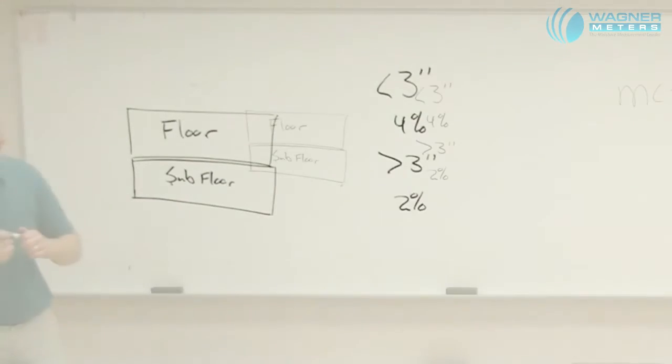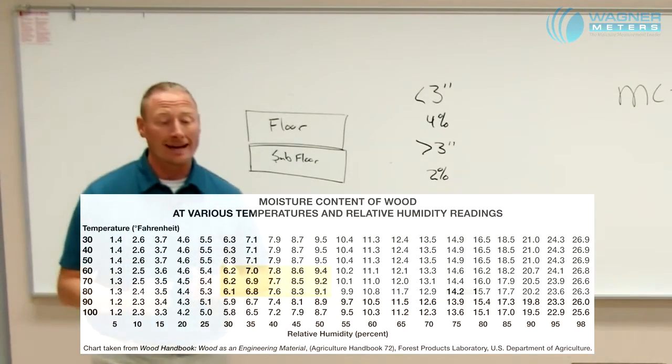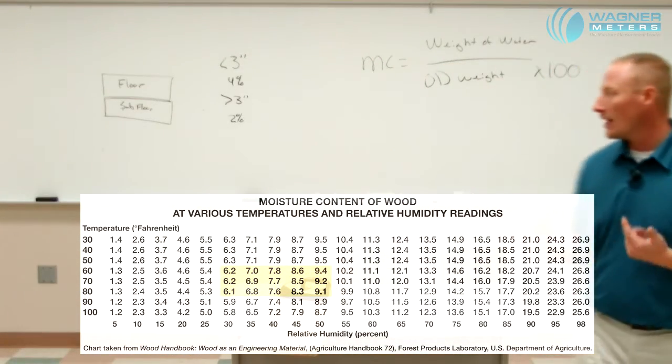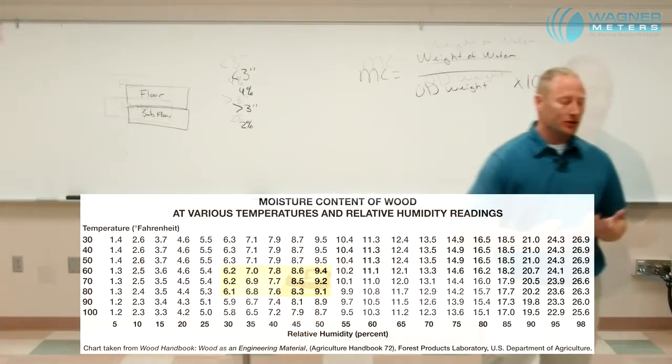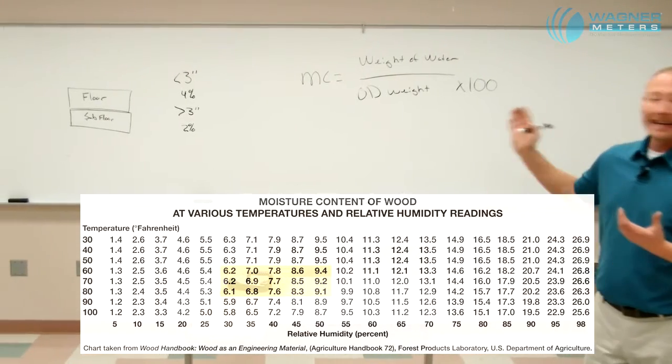One thing to be aware of is that making sure that both the flooring and the subflooring have reached their EMC prior to measuring or determining that difference in moisture content is very important. If we don't allow those materials to equalize or reach their equilibrium or EMC, we will not get accurate readings.